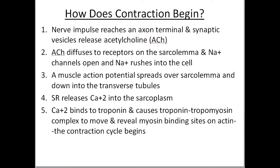How does muscle contraction begin? It's a five-stage process. A nerve impulse reaches an axon terminal and synaptic vesicles release acetylcholine (ACh). Acetylcholine diffuses to the receptors on the sarcolemma, sodium channels open, and sodium rushes into the cell. A muscle action potential spreads over the sarcolemma and down into the T-tubules. The sarcoplasmic reticulum releases calcium into the sarcoplasm, calcium binds to troponin, causing the troponin-tropomyosin complex to move and reveal the myosin binding sites on the actin, and the contraction cycle begins.